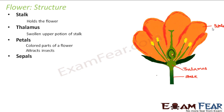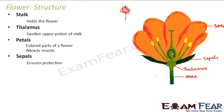Next are sepals — the green colored structures found just below and outside the petals. They are smaller in size and generally green in color. Their primary function is to protect the flower when it is a bud. When the flower is a bud, the sepals cover it completely from outside, ensuring full protection to the bud.